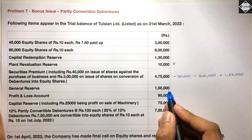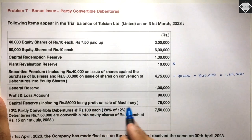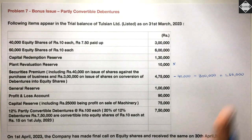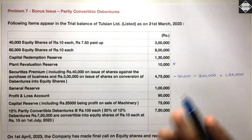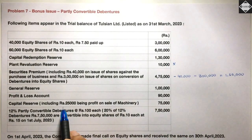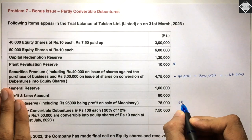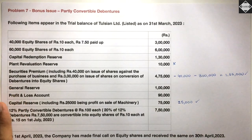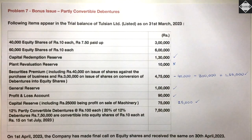General Reserve: Rs.1 lakh — this is a free reserve, can be used. Profit and Loss: yes, can use. Capital Reserve: Rs.75,000, including Rs.25,000 being profit on sale of machinery. When the question is silent about capital reserve, assume it's not realized in cash. But here, Rs.25,000 from sale of machinery is realized in cash. So out of Rs.75,000 capital reserve, only Rs.25,000 can be used.